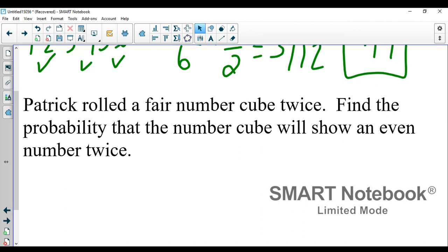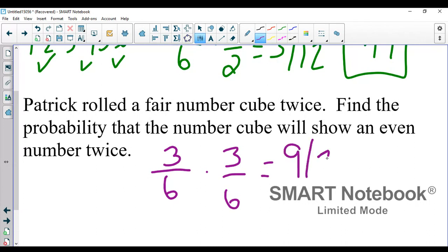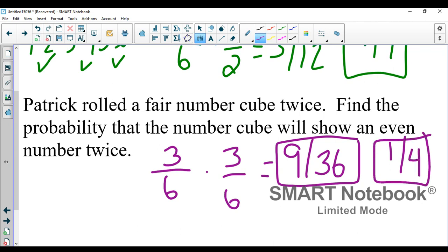The last one says Patrick rolled a fair number cube twice. Find the probability it will show an even number twice. Well even number on the first spin is three out of six, even number on the second spin is three out of six. That is nine out of thirty-six, and when you simplify that, that is also one out of four.